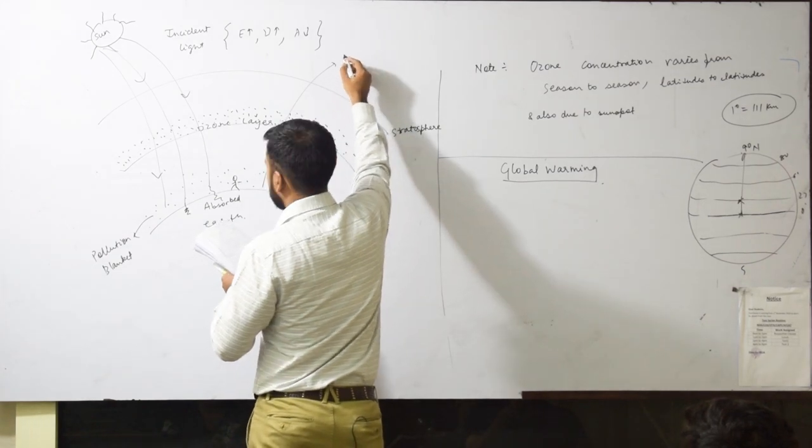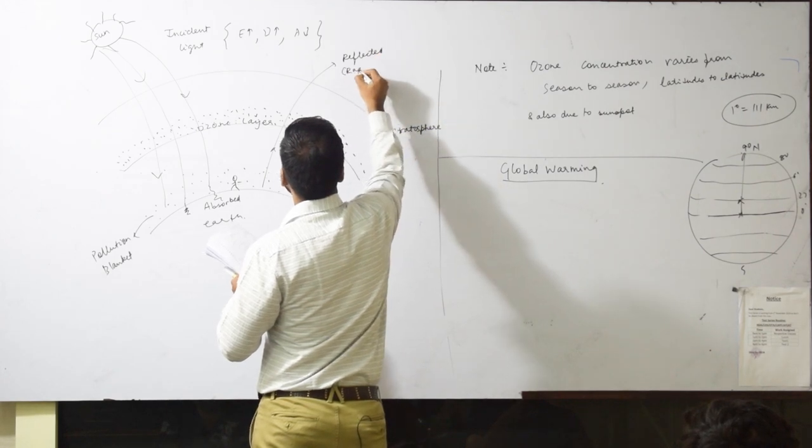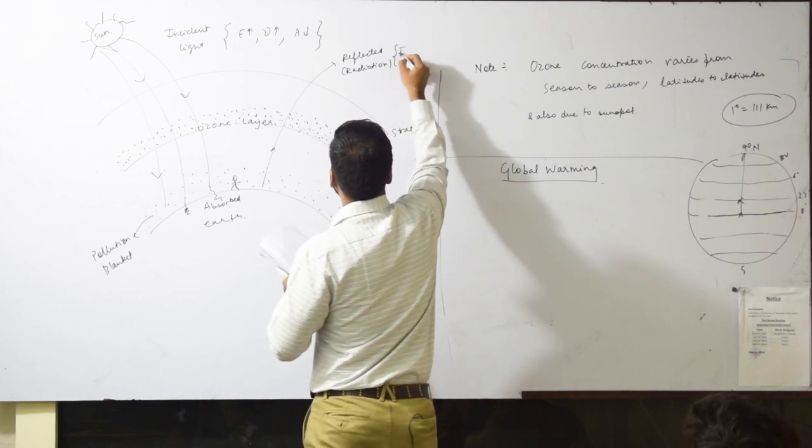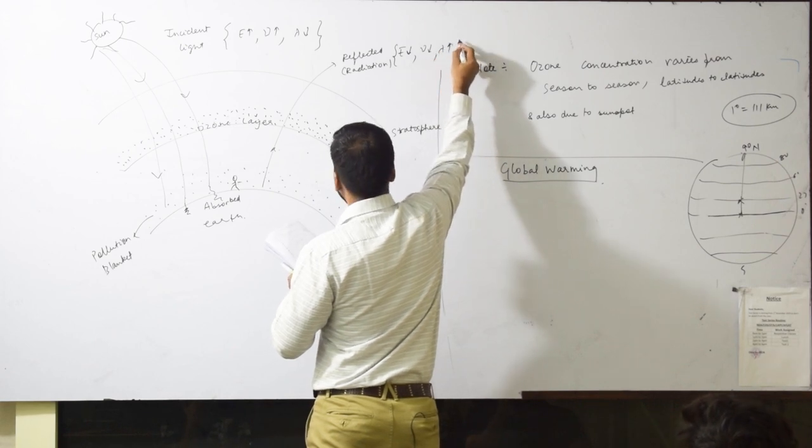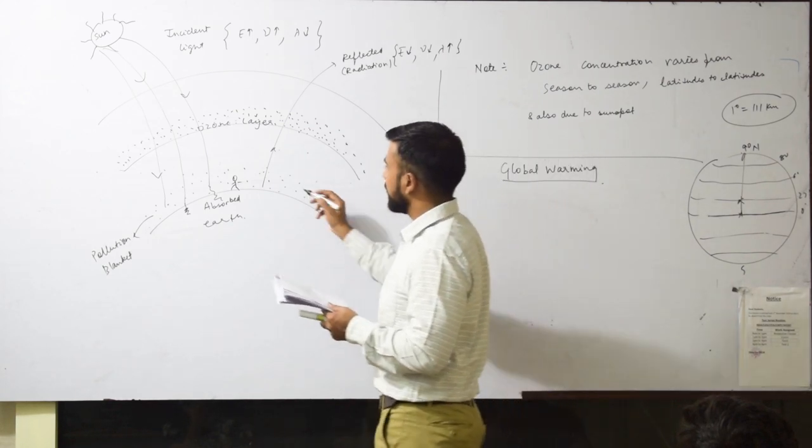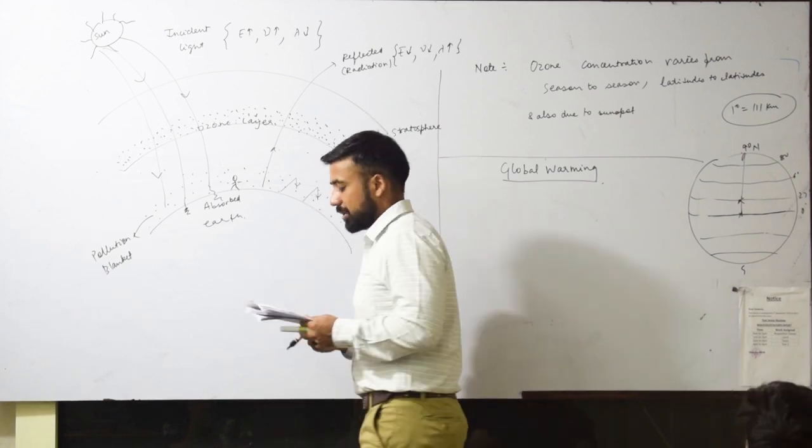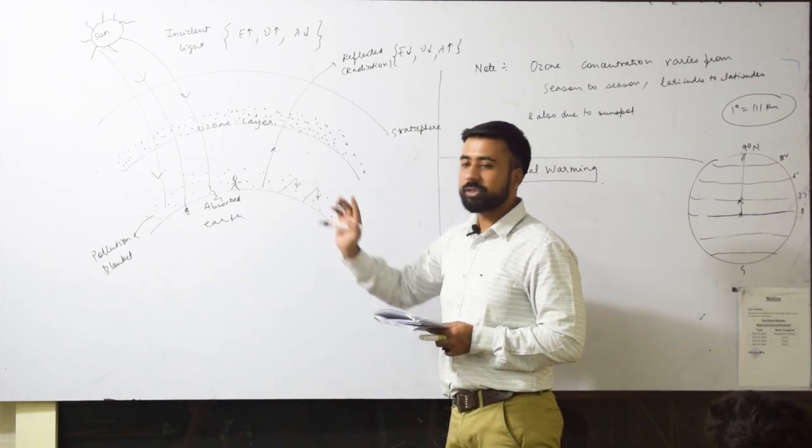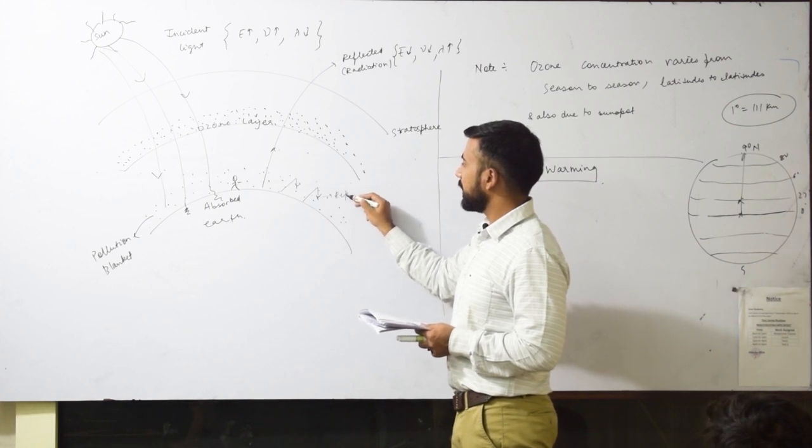But when the light will go into space, what will it be? This is reflected light or reflected radiation - whose energy becomes lower, and frequency becomes lower, but wavelength higher. And some will get trapped, the reflected ones, some will get trapped. They will re-reflect from this pollution blanket. They will be re-reflected.